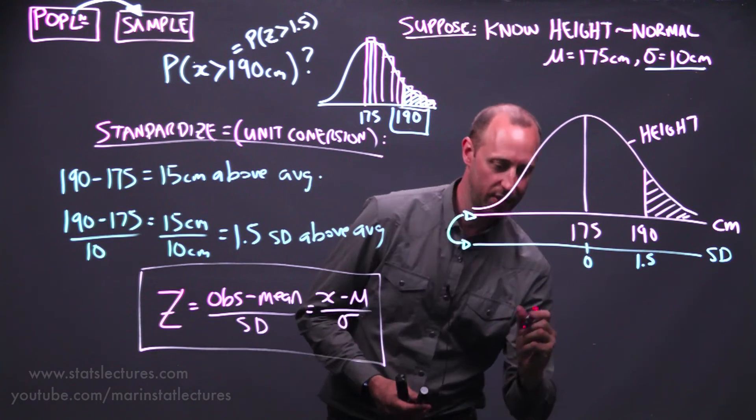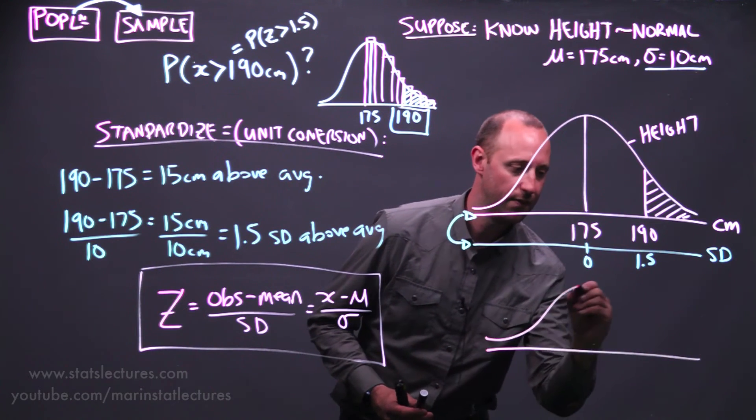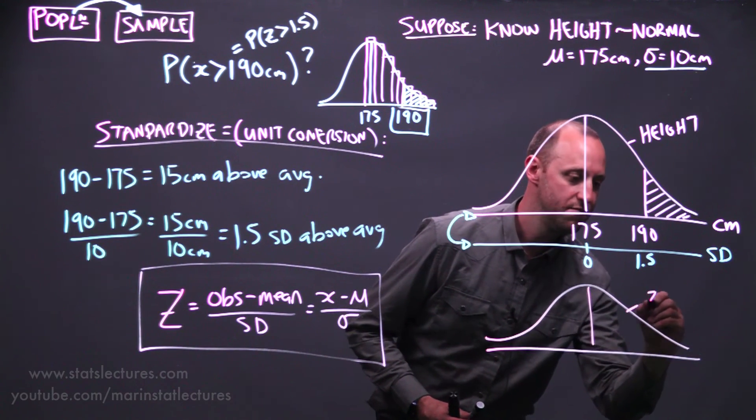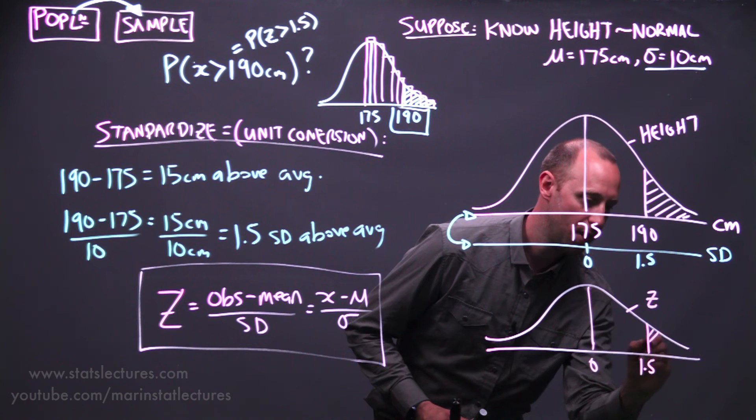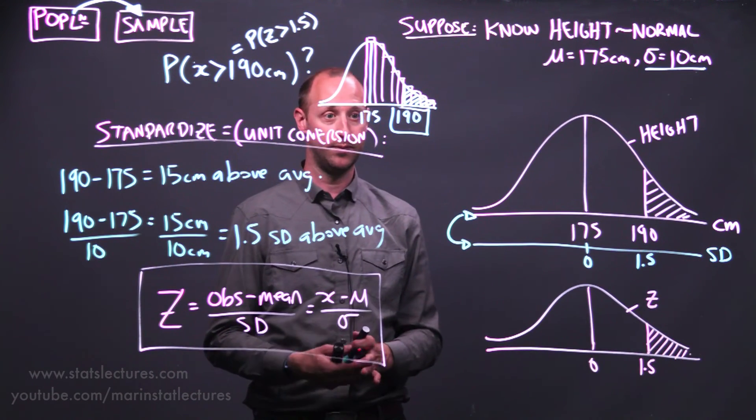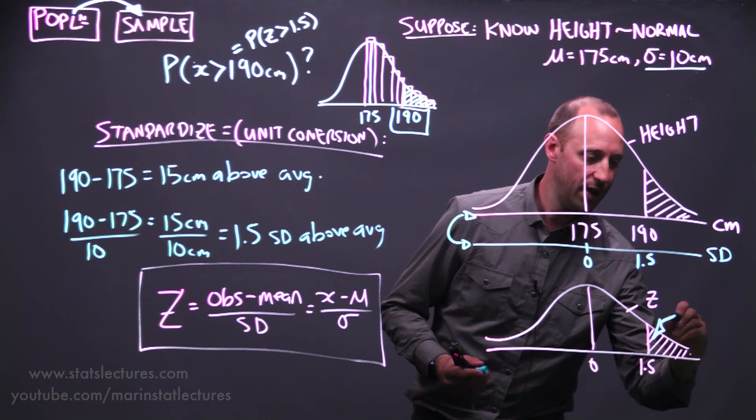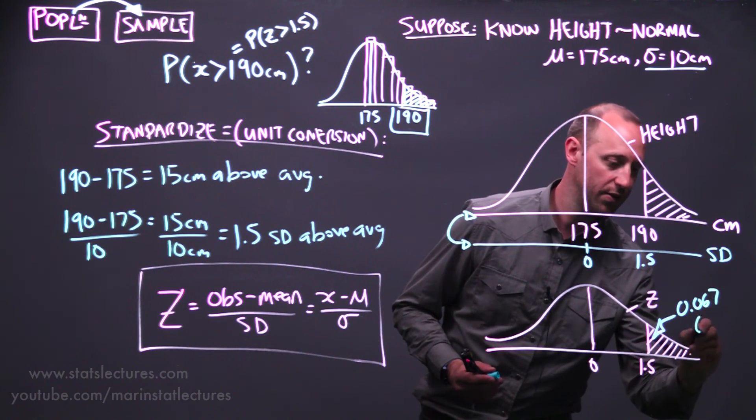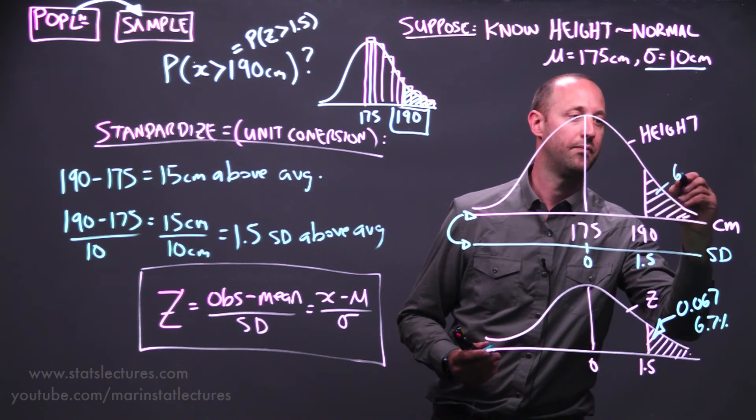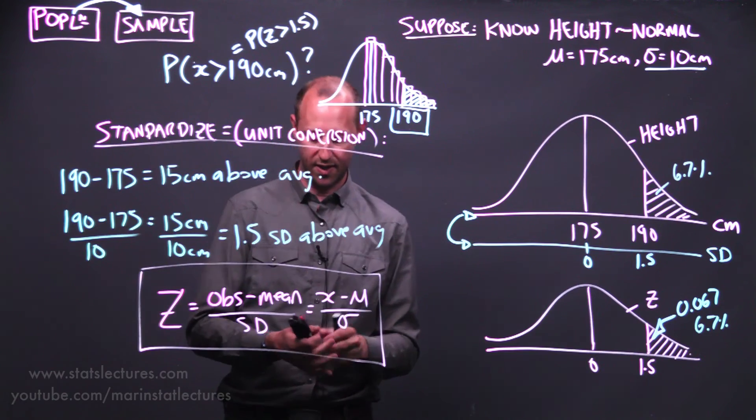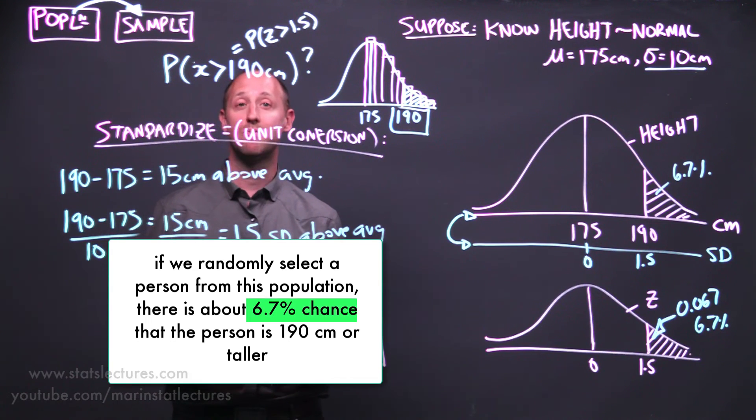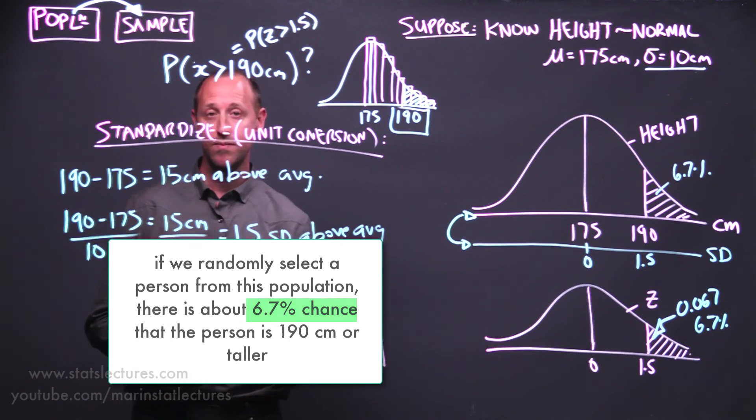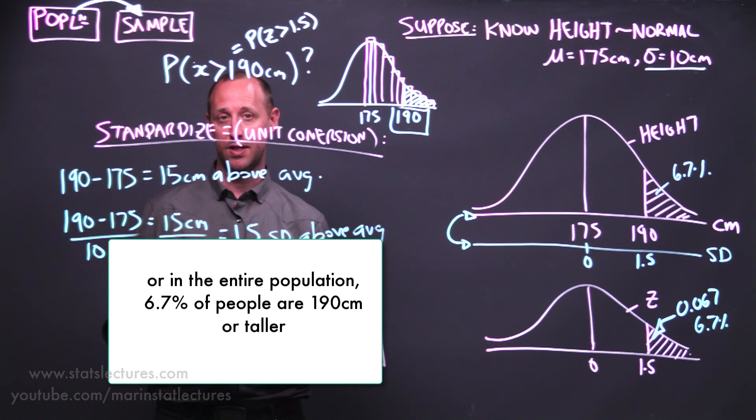Or if you like the picture a little bit cleaner, we can redraw this here rather than on the scale of height, on the standardized height, and we want to find out what's the probability of being one and a half standard deviations above average or more. We can find that this here comes out to be 0.067 or 6.7%. So we can think of this as being that if we randomly select an individual from the population, there's about a 6.7% chance of them being 190 centimeters or more, or we can think of it that in the entire population, 6.7% of people will be 190 centimeters or more.